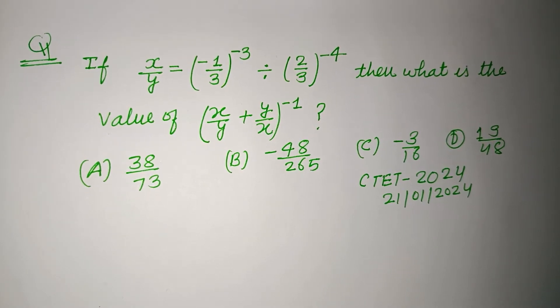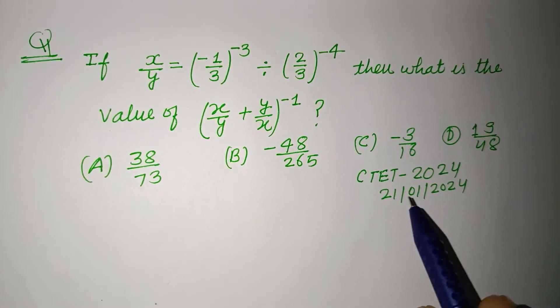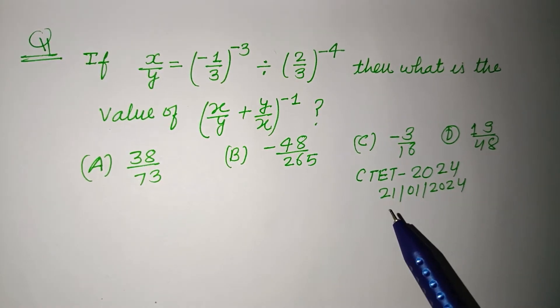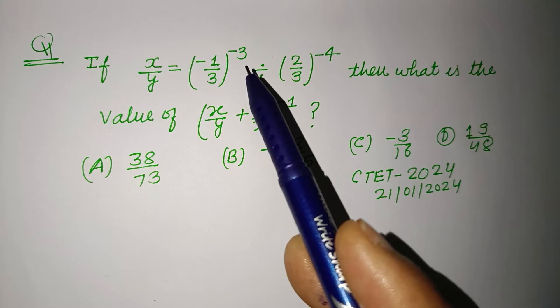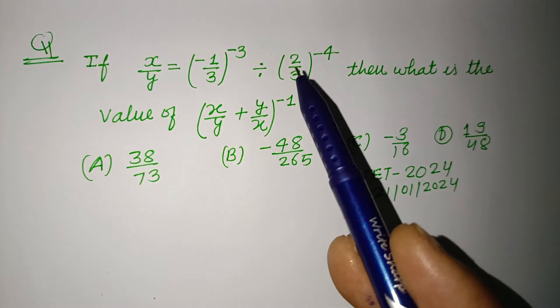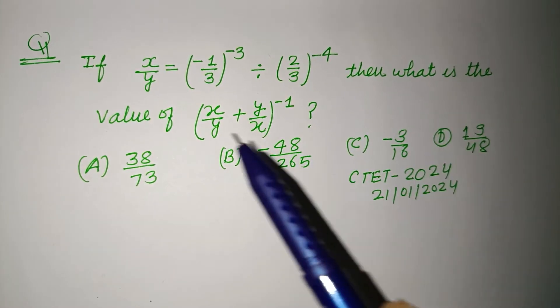Hello viewer, you are watching solution of CTET 2024. Question is: if x/y equals (-1/3)^(-3) divided by (2/3)^(-4), then what is the value of...